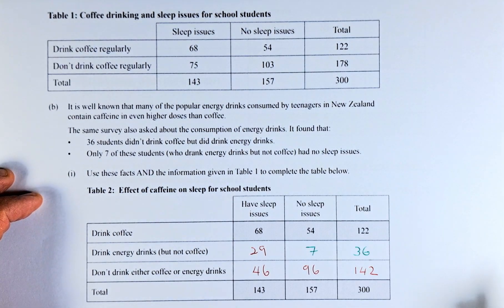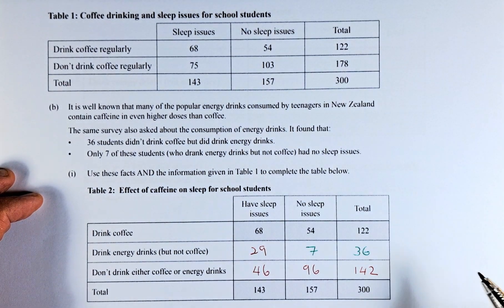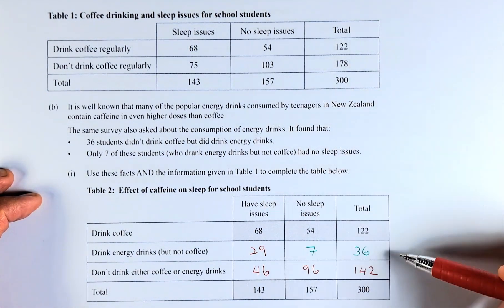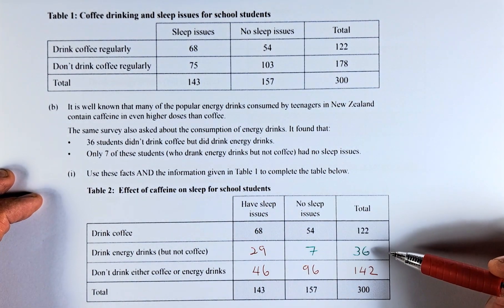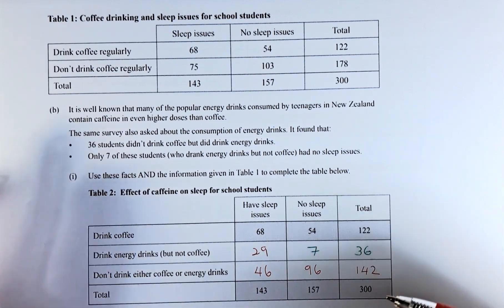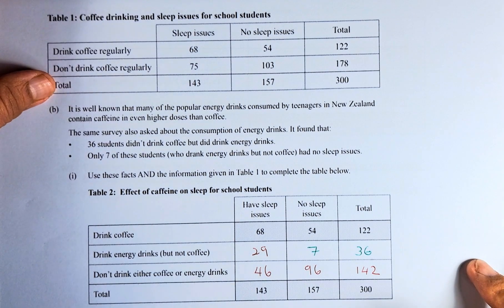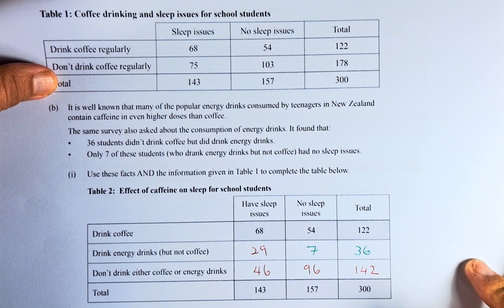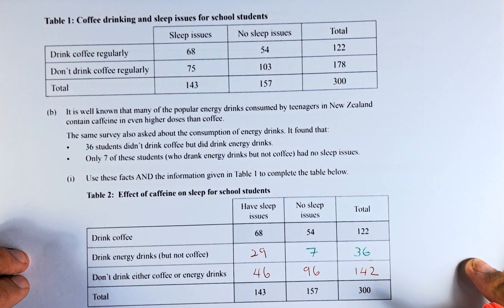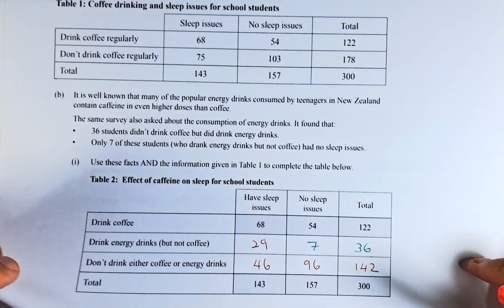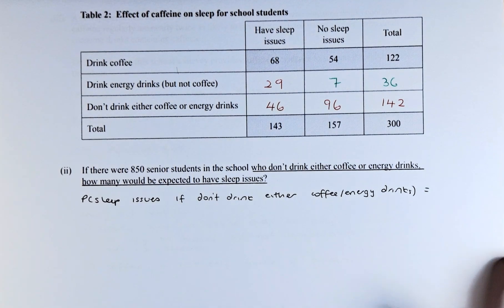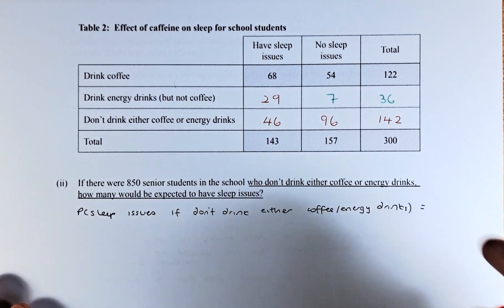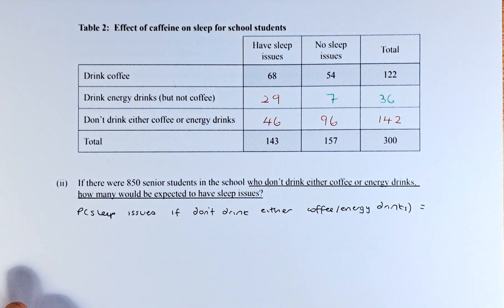So that is part 1 — we complete the table using the given data. Once we have done that, we transfer this table into the next question, which is question 1B part 2. We have now transferred the table onto here — exactly the same table.